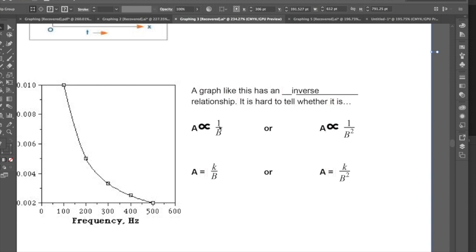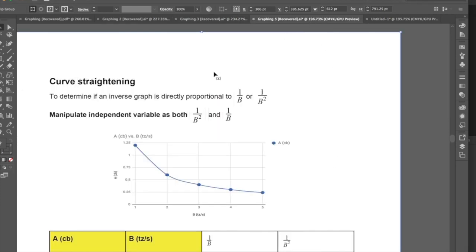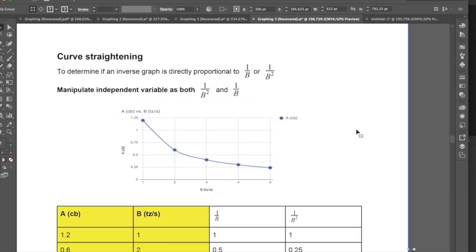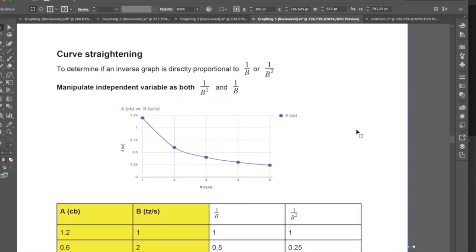Like we had talked about before, where it's a direct correlation between one over the independent variable or some constant over the independent variable or some constant over the independent variable squared, so an exponential function. So what we're going to be doing today in this video is just quickly going over how we can determine if a graph like this is directly proportional to its inverse or directly proportional to its inverse squared. So this is a process that we call curve straightening. It determines if an inverse graph is directly proportional to 1 over b or 1 over b squared.